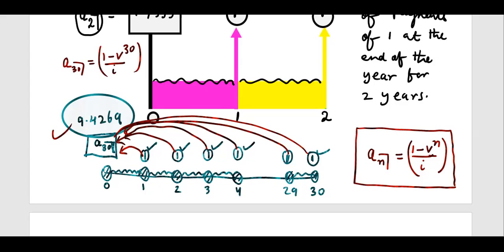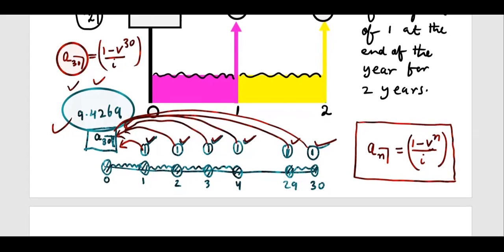One payment is equivalent to thirty yearly payments of 1. Alternatively, you can think this way: suppose you have 9.4269 now — you deposit it in the bank, you withdraw 1 each year, and you will get 1 for thirty years. This is called annuity in arrears. We have found the present value here. This is one type of annuity — there are so many types and we will do them in due course.